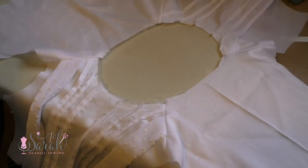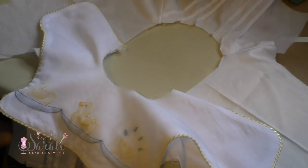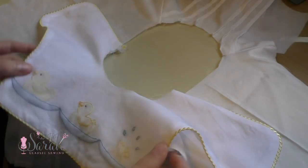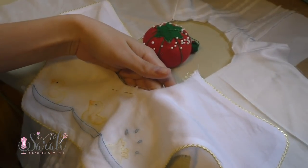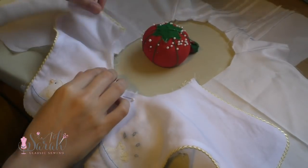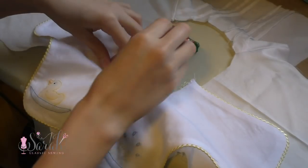Then I attached the collar to the shirt. I unfolded the shirt lining from the shirt since I'm only sewing the collar to the shirt for right now, not the lining area. I matched up the center of the collar to the center of the front of the shirt, and then I continued to pin around to the back of the shirt.